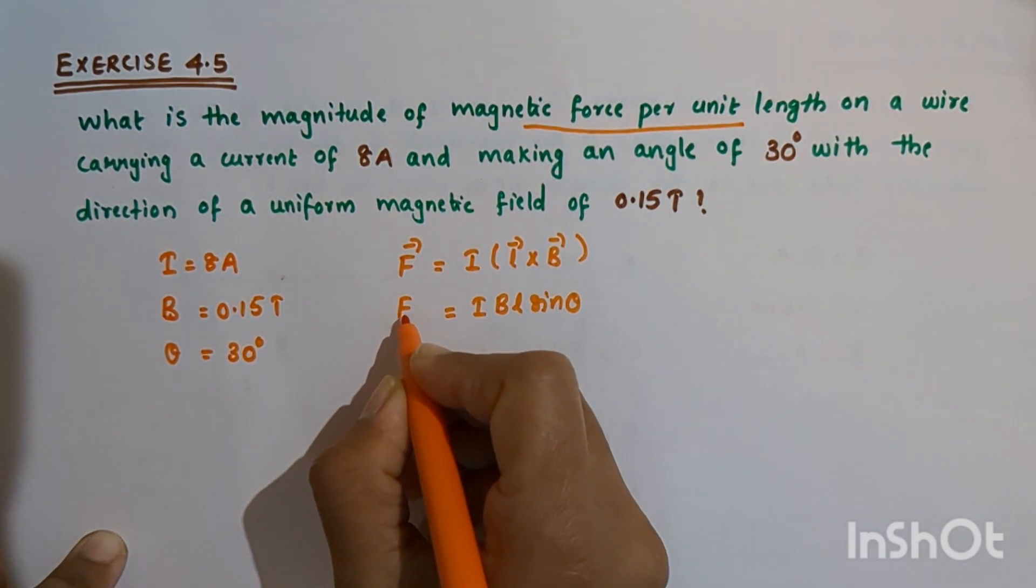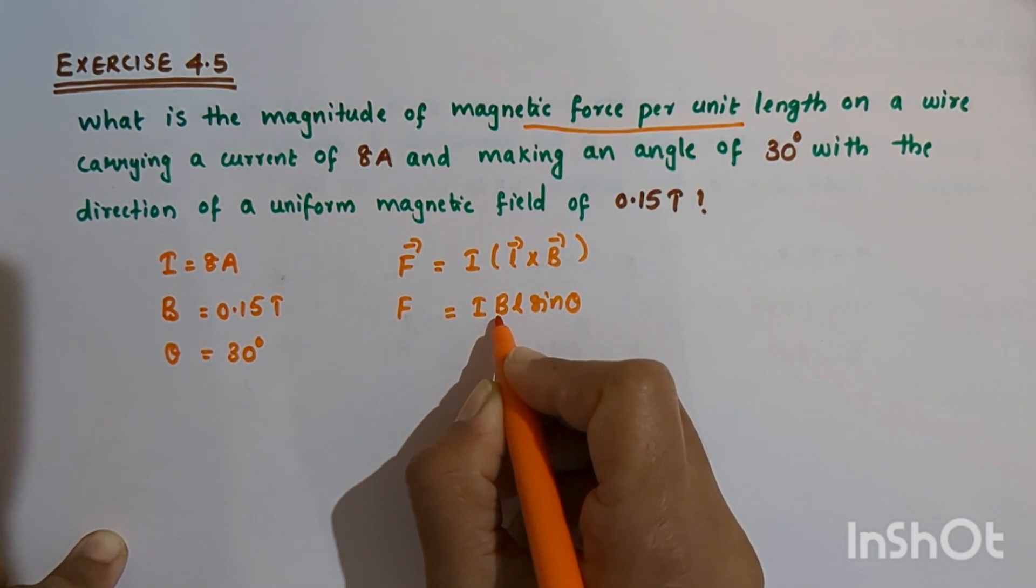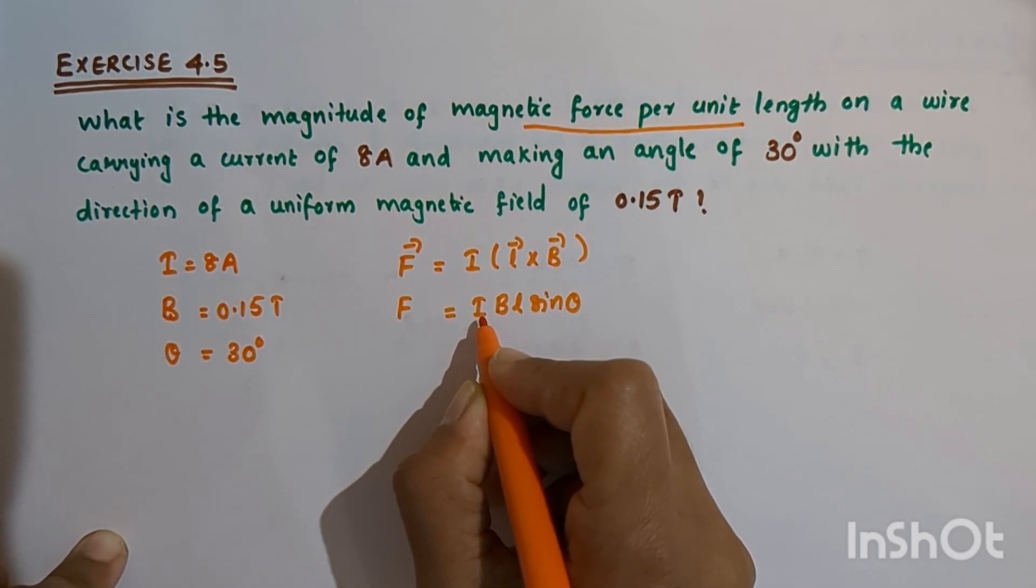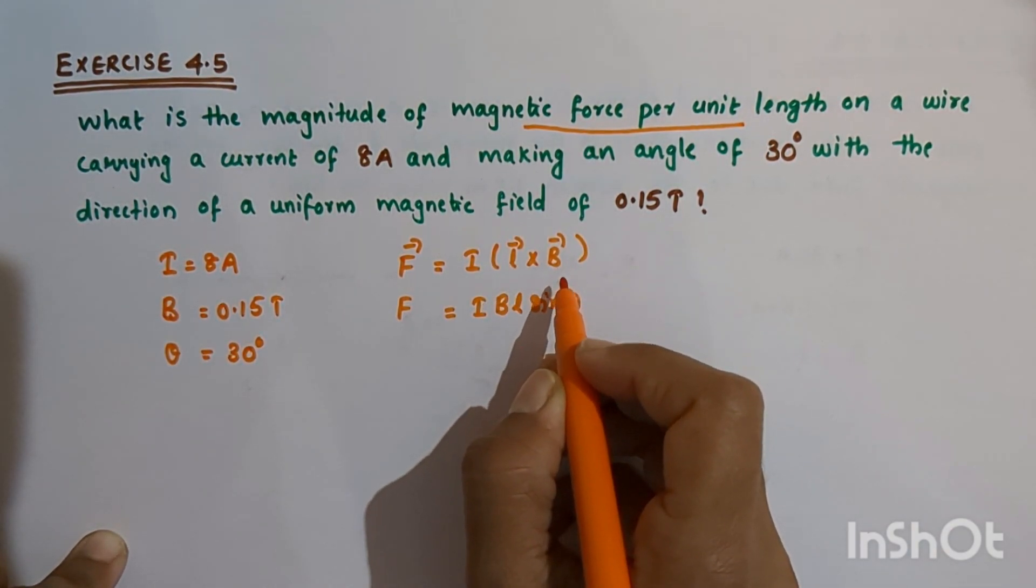This is the magnitude of force acting on a current carrying wire of length L in an external magnetic field B, where theta is the angle between vector L and vector B.